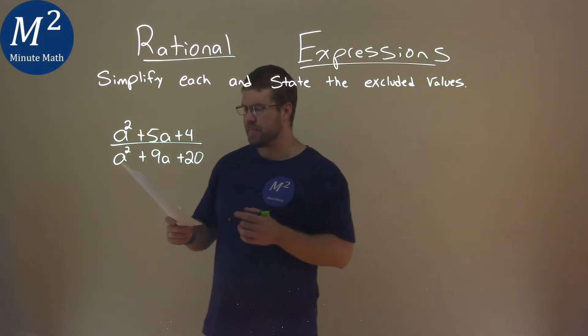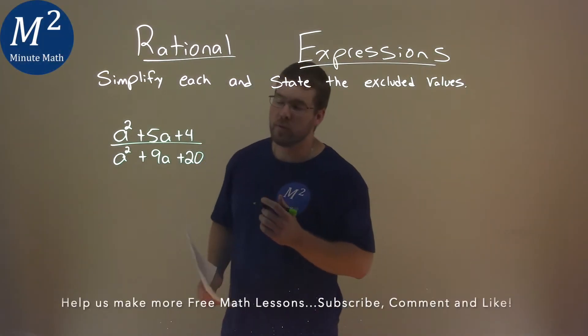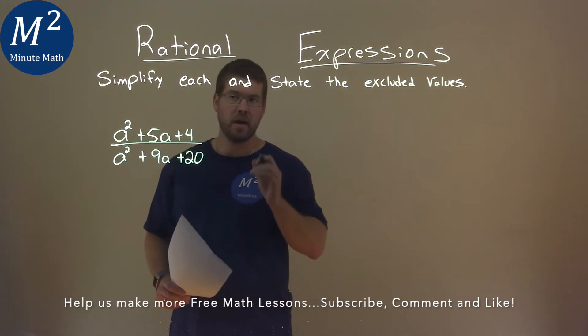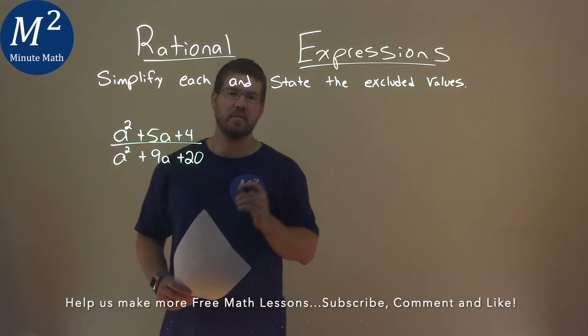We're given this problem right here: a squared plus 5a plus 4 over a squared plus 9a plus 20. We need to simplify this and state the excluded values.